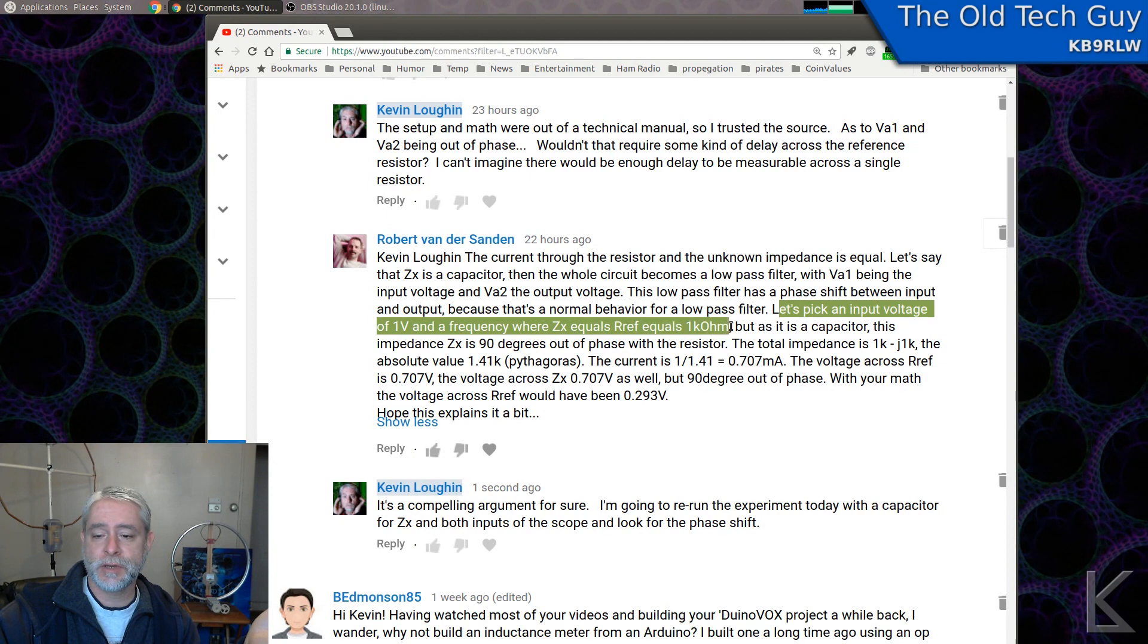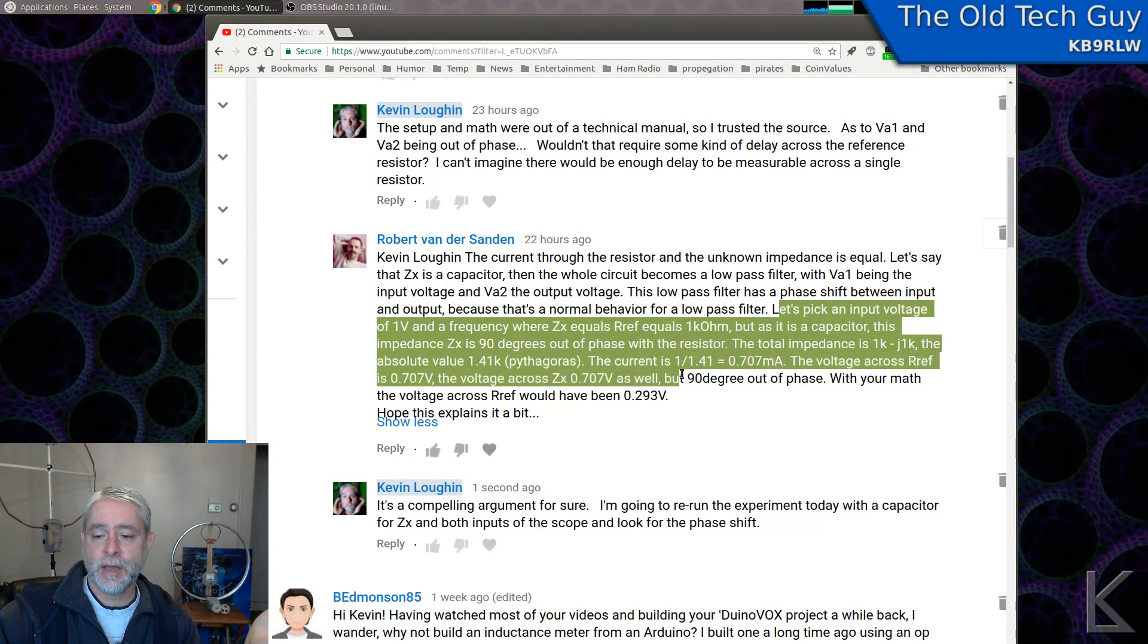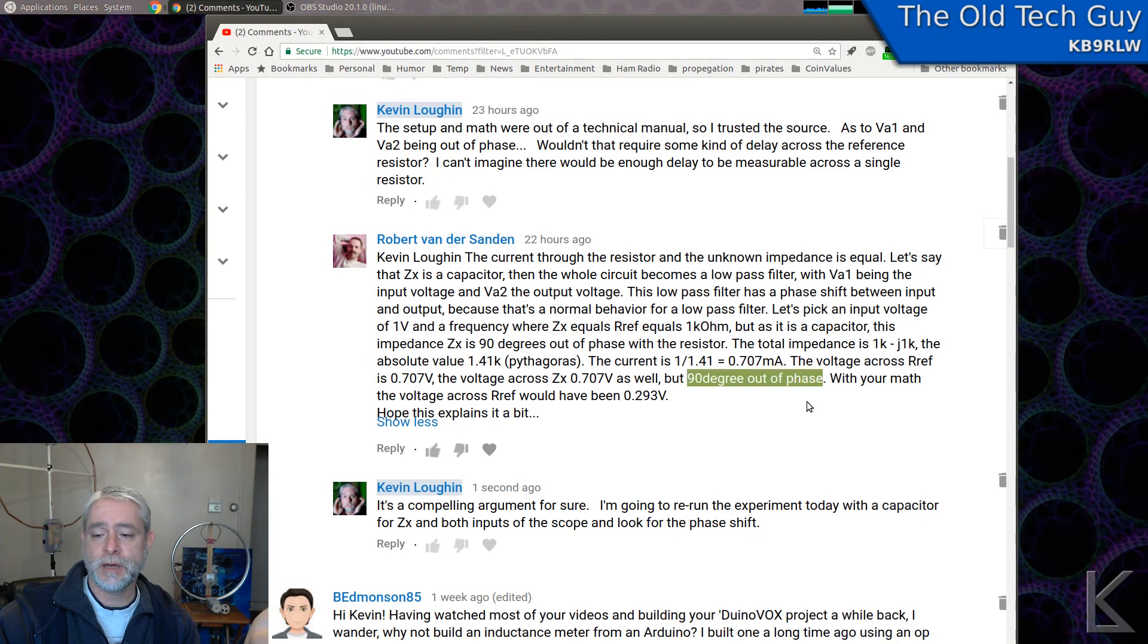Let's pick an input voltage. So he gives an example where he does the math and calculates that there would be a phase shift of a full 90 degrees between those two signals, which is pretty extreme. It's a compelling argument. And so I thought, well, let's just test it. We'll go down to the bench. We'll hook up the jig again and we'll put the scope on the input and the output of that resistor. And we'll look at the signals and we'll see if they shift phase or not. So let's go down to the bench.